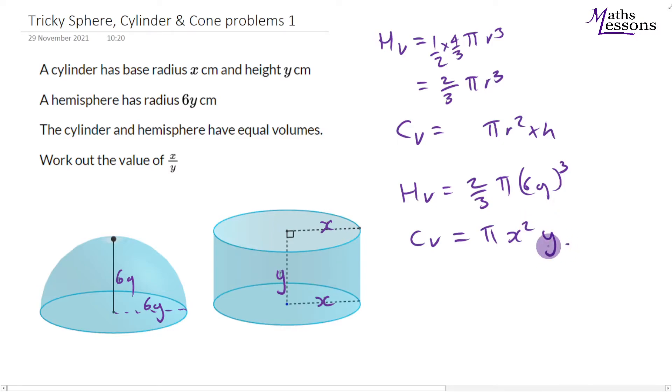Okay, now what we do know is these two volumes are equal, so let's make them equal. When you've got these difficult problems, use the information given in the question to produce some working. So we found the hemisphere volume, found the cylinder volume, we are told they have equal volume, so let's make these two things equal.